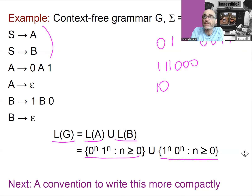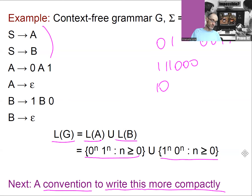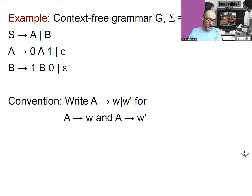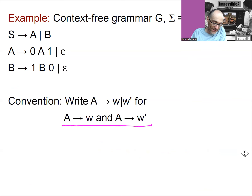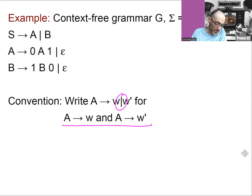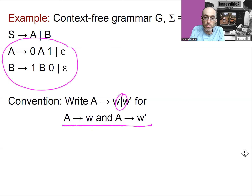Just like for DFAs, it's good to have some conventions that allow us to write grammars more compactly. So instead of writing multiple rules, we write a single rule but separate the right-hand sides with the vertical bar. If we write A → W | W', it means there's a rule A → W and another rule A → W'. This allows us to write grammars more compactly.